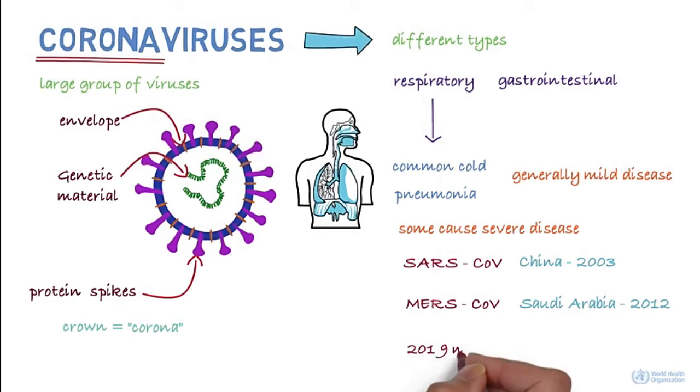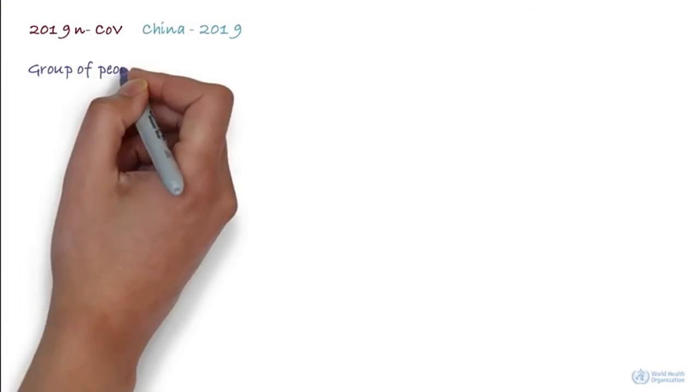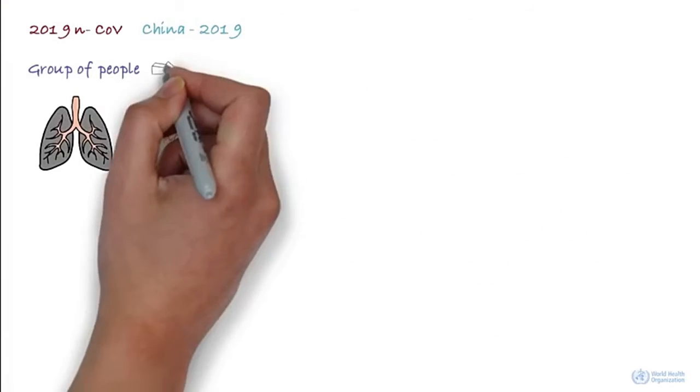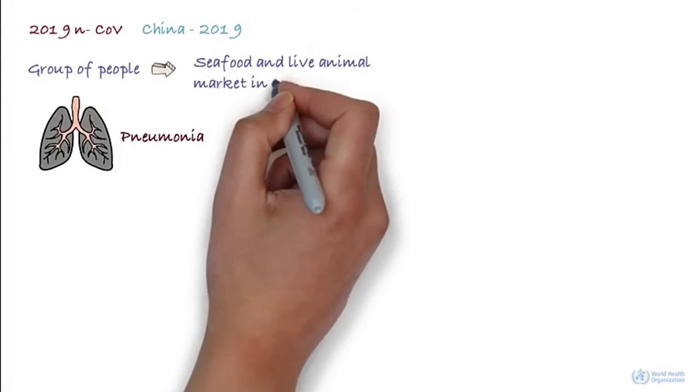The 2019 novel coronavirus was first identified in China. It initially occurred in a group of people with pneumonia who'd been associated with a seafood and live animal market in the city of Wuhan.